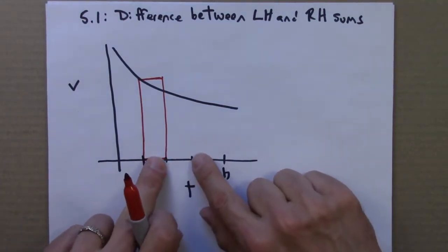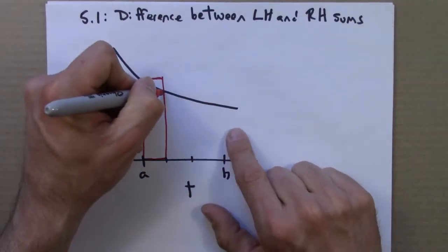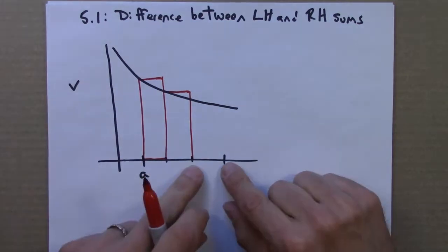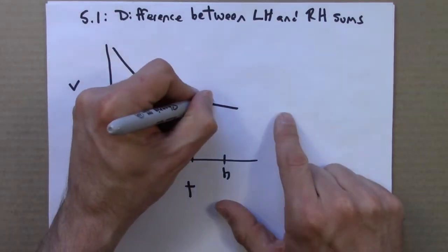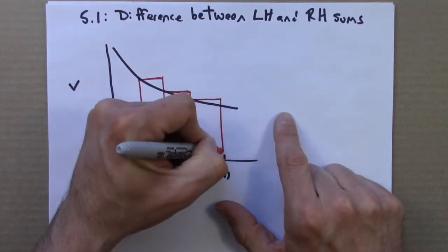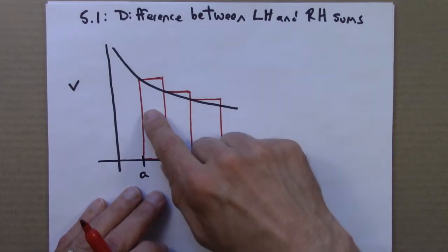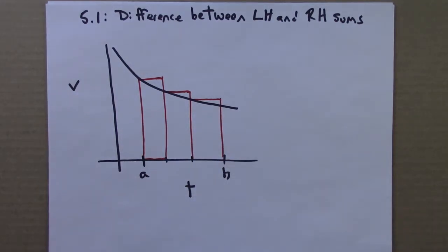Then what happens for this interval? Same thing. We build a rectangle, but we choose the left value. And in this interval, what do we do? A rectangle, and we choose the left value. So the sum of the area of these three rectangles is, in this case, an overestimate for how far the cat actually goes.